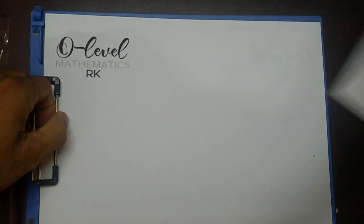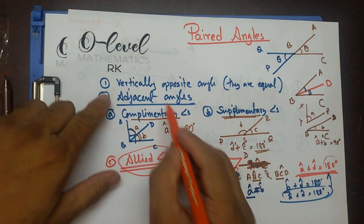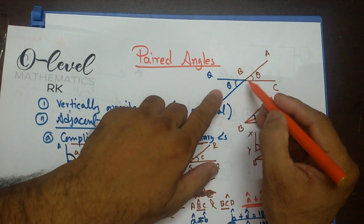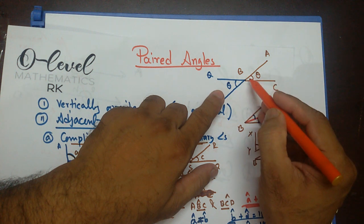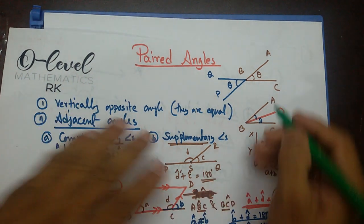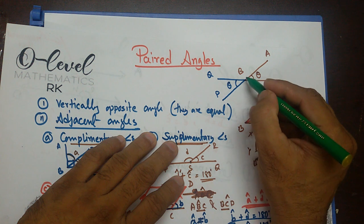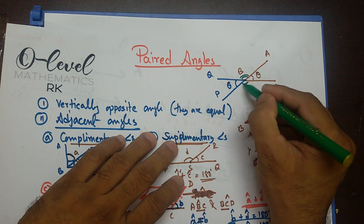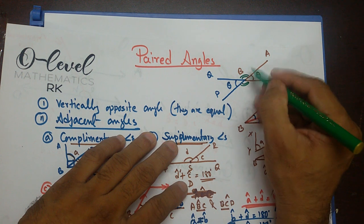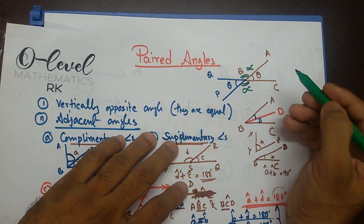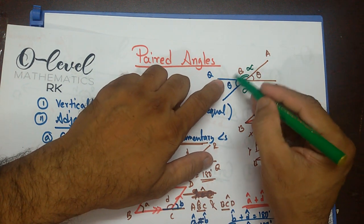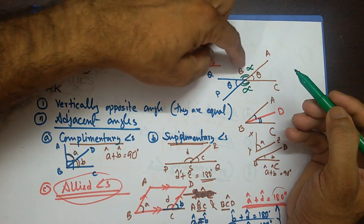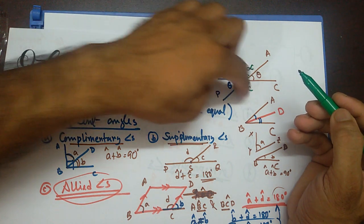Let's go back from the beginning. First, vertically opposite angles: when two angles form at opposites of the vertex, they are called vertically opposite angles. When these two line segments are extended, they actually form another angle — let's say this is alpha, and this is alpha. So there are two pairs of equal angles: theta equals theta, and alpha equals alpha — both pairs are vertically opposite angles.